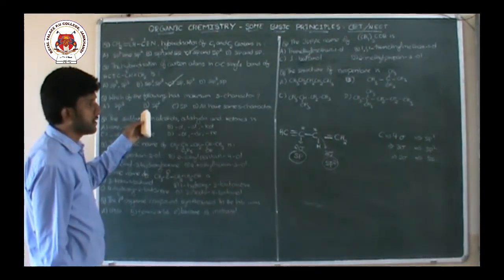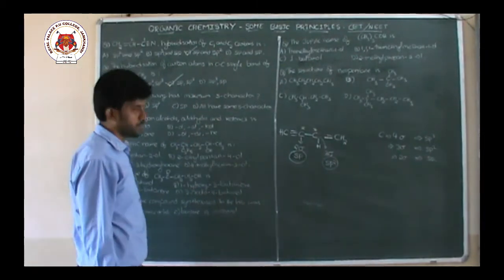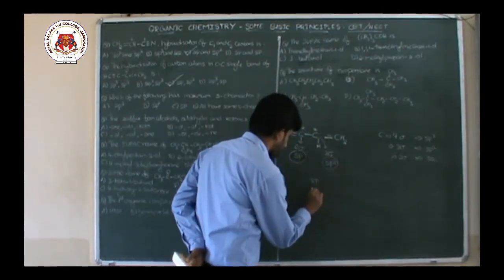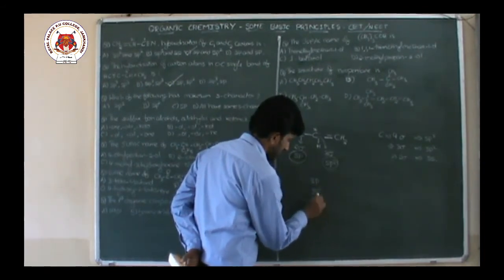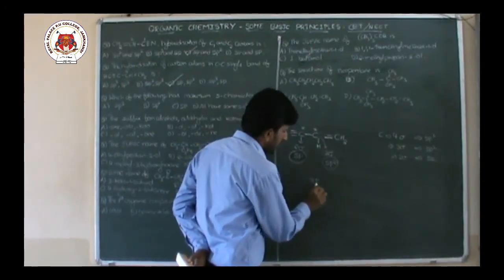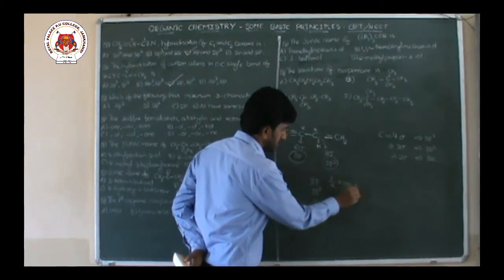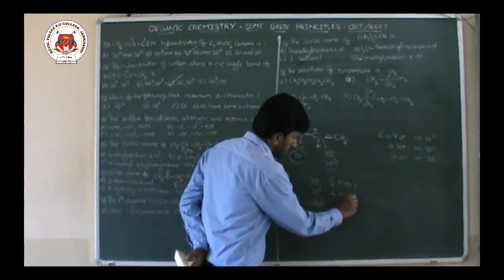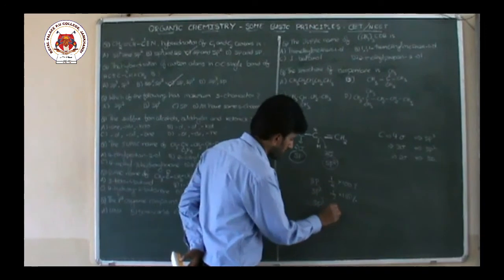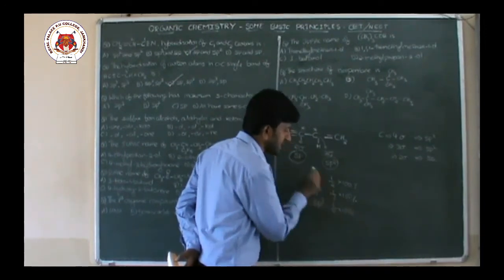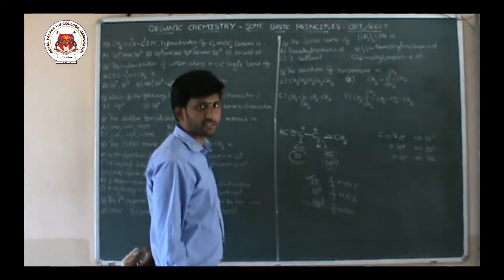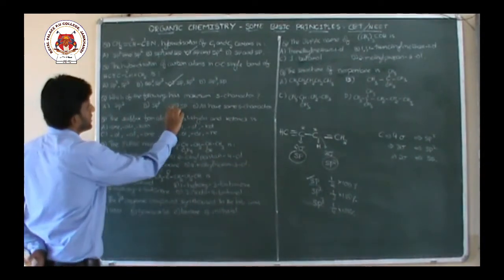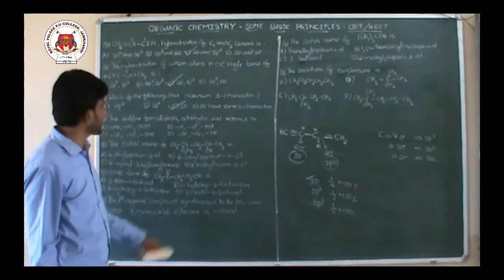Which of the following has maximum S character? Just now I told you: SP has S character of 1/2 × 100 = 50%. SP2 has S character of 1/3 × 100 ≈ 33.33%. SP3 has S character of 1/4 × 100 = 25%. So the maximum S character is SP with 50%. The right option is C.